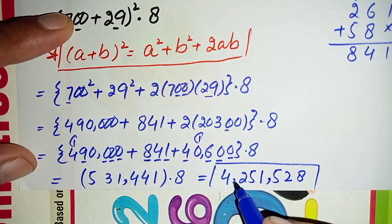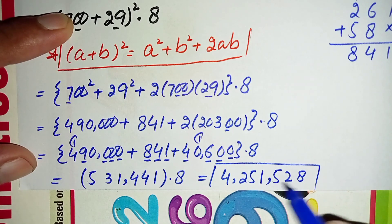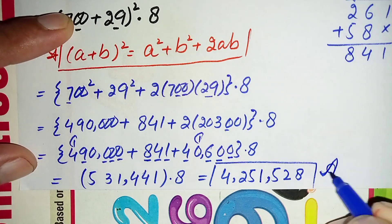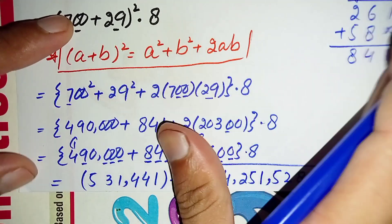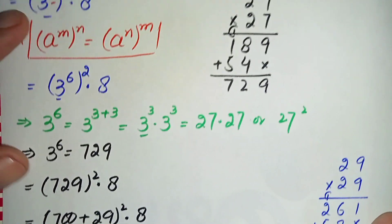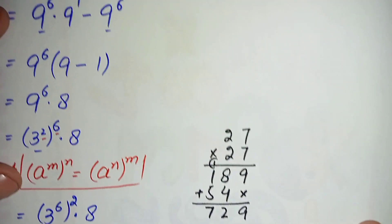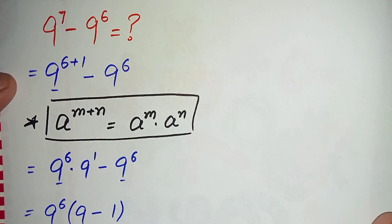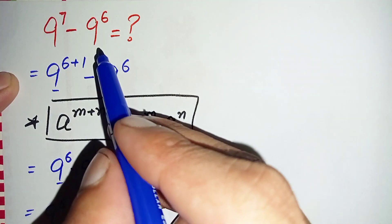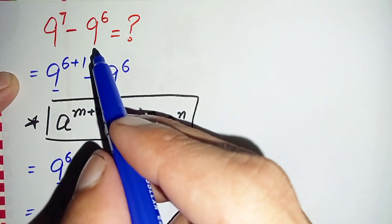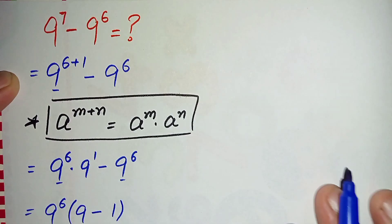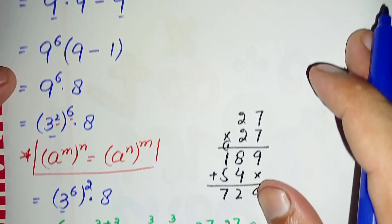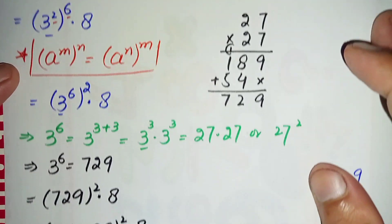So finally the answer is 4 million, 251 thousand, 528. This is our final answer for this interesting math problem. If you like this video, don't forget to subscribe to my YouTube channel. Thanks for watching.